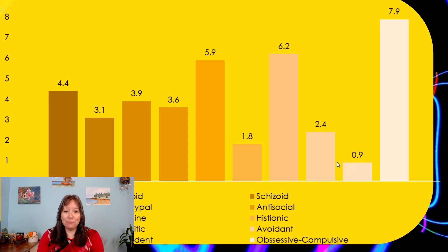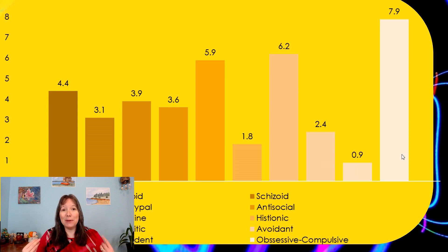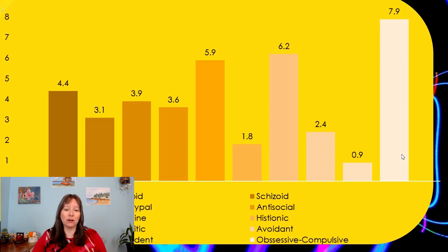Then we have dependent and avoidant, which are also similar to some of our anxiety measures. So you can see the first three and the last three could just be considered milder versions of other disorders we've talked about.